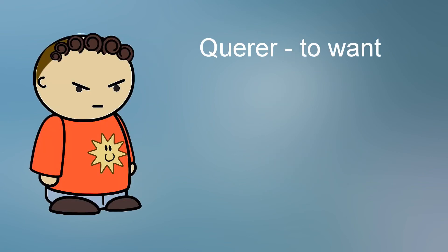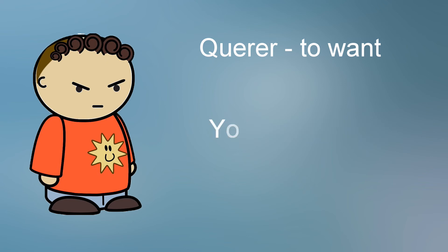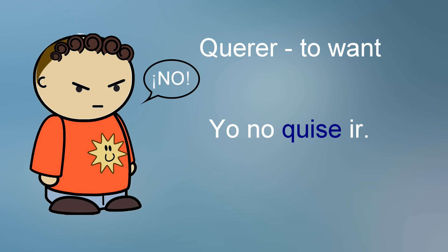Here's the verb querer. As discussed earlier, the strength of the preterite changes the significance of this verb. Yo no quería ir — I didn't want to go. There's no specificity to the verb when used in the imperfect; it's quite possible that I went even though I didn't want to. Yo no quise ir — I didn't want to go, or I refused to go. The preterite specifies a moment and the Spanish speaker is saying that not only did he not want to go, he didn't go — an actual action.